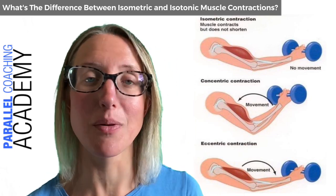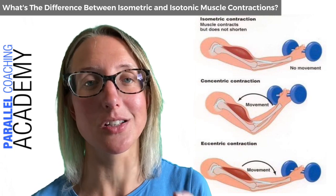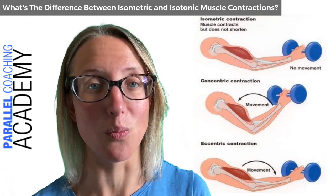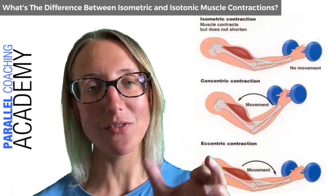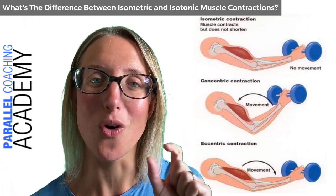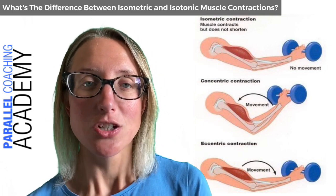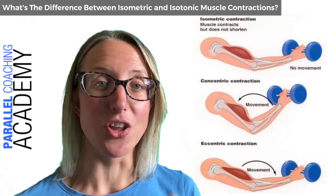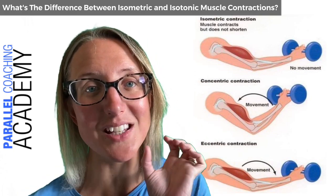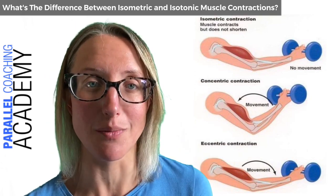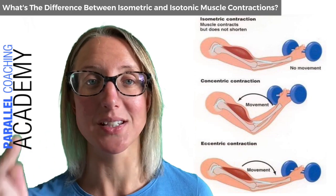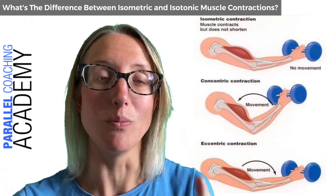The other type of muscle contraction is isotonic, and this is divided into two: concentric and eccentric. 'Iso' means the same, and 'tonic' this time refers to tone — so it's the same tone in the muscle, still contracted, but we're not talking about same length because these all involve movement.